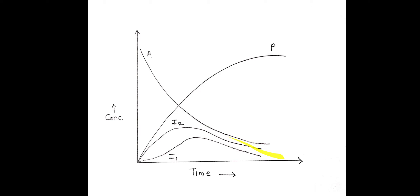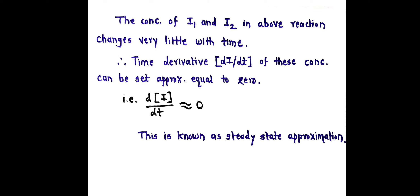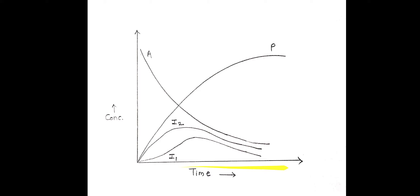The concentration of A starts to decrease. At that time, the concentration of I1 initially increases then decreases. When it decreases, there is an increase in concentration of I2. Again, that concentration starts to decrease and there is an increase in concentration of product. The conclusion from this is that the concentration of I1 and I2 in the above reaction changes very little with time. On the graph, where time is plotted against concentration, there is no major change in the concentration of intermediates I1 and I2.